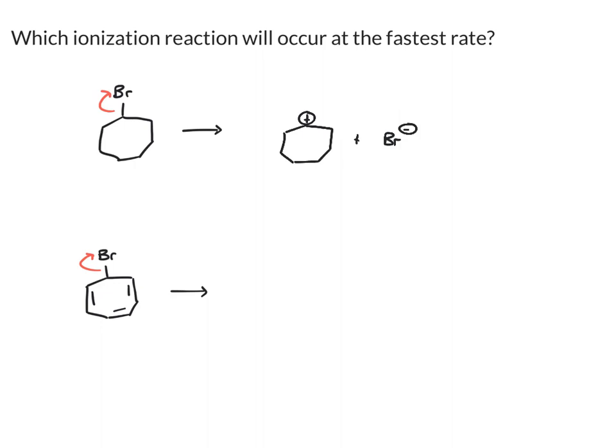In our second example, once you lose the leaving group, you get this carbocation, again, plus the bromide anion.